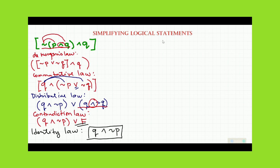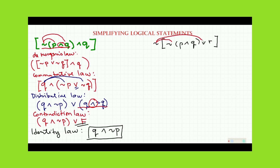For another example, let's simplify: negation of (negation of P and Q) or R. To simplify this statement, we will use De Morgan's law, distributing the outer negation sign to this compound statement.